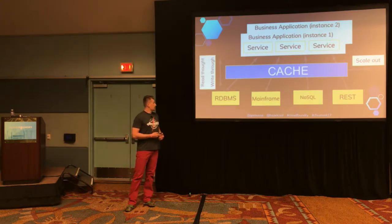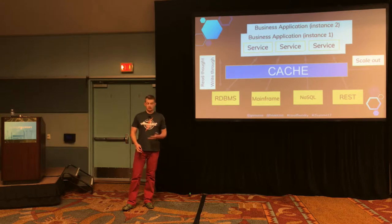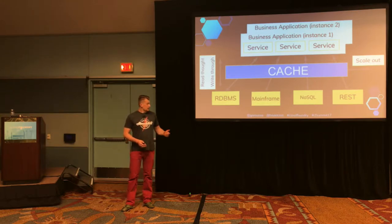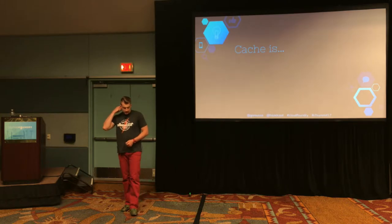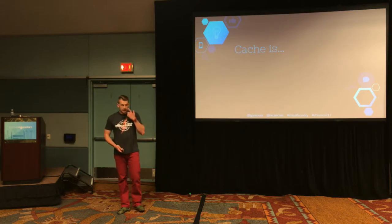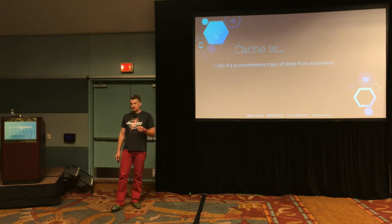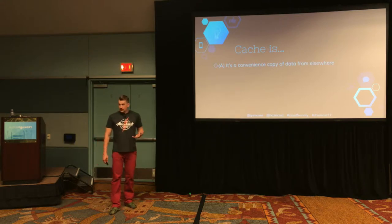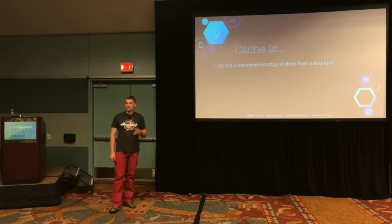We're going to talk about distributed caching today and the pattern called read-through cache and write-through cache. Meaning you go into the cache — if data is not there, it will fetch it for you; if it's there, it will simply retrieve it. Cache is everywhere. Any storage with a key-value access pattern can be a cache. It needs simple access patterns. Cache is basically a copy of the data, and the beauty is that access to this copy happens very quickly.